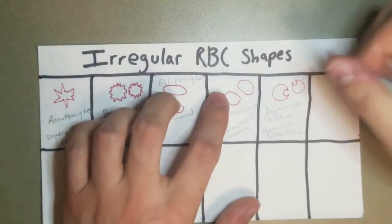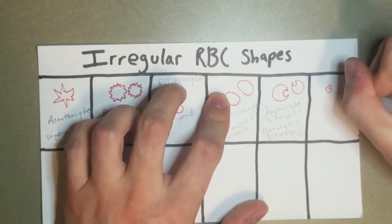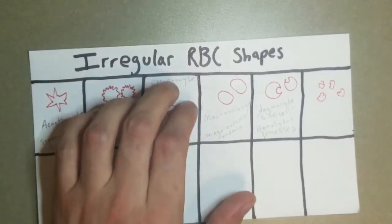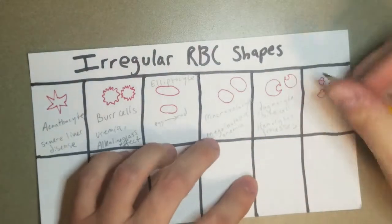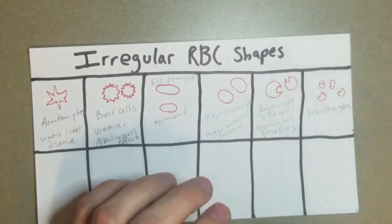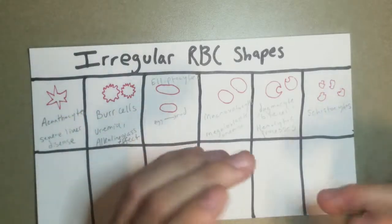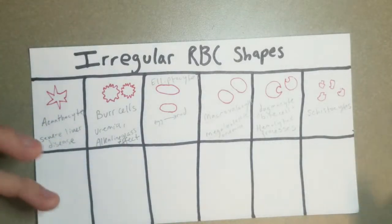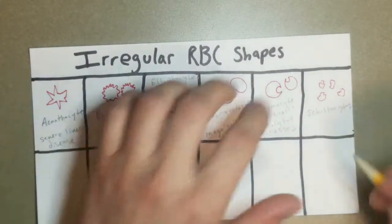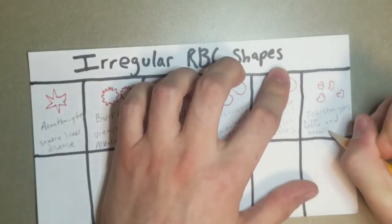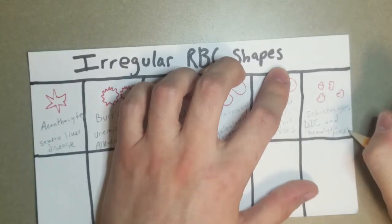Now, moving on, we have schistocytes, which, my favorite to draw, they're just basically little squiggles. Little tiny segments of red cells. And, as you might imagine, schistocytes are as a result of red cell fragmentation. There was some kind of red cell going on in circulation, something caused it to break apart, could have been a parasite, some kind of bacteria, it could have been going through a narrow area. A lot of different things can cause this, but commonly you'll see it in DIC, which is more severe, and any kind of hemolytic process, which is a broad term, but a lot of things can cause it.